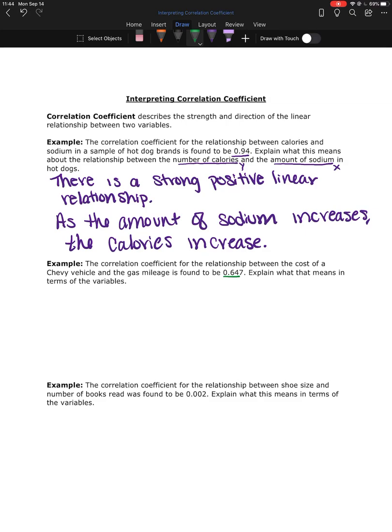If we see something that wants us to explain it in terms of the variables, you have to mention the variables in that explanation. If you don't mention the variables, then you aren't doing what's being asked. You aren't explaining it.